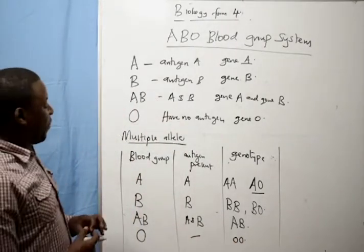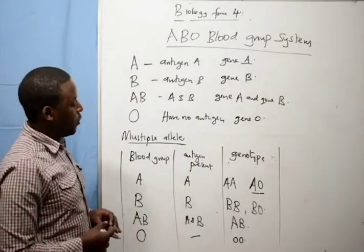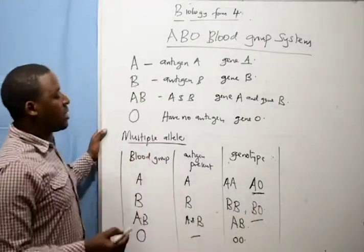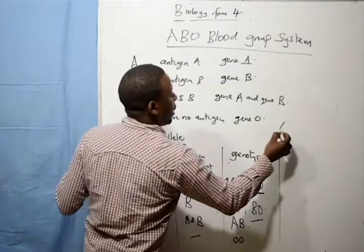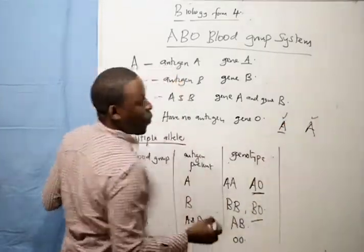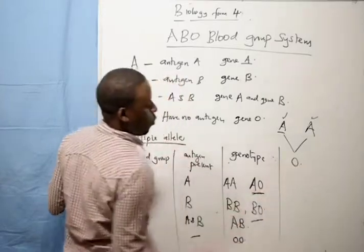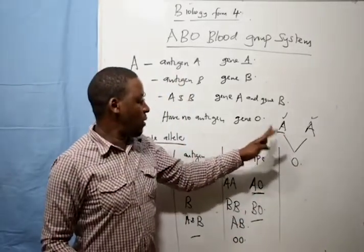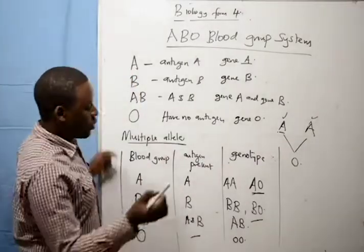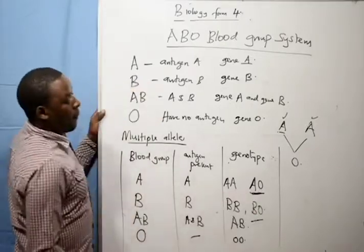A person can have gene O and gene A and still be blood group A. This explains why two people with blood group A — a male and a female — can have a child who is blood group O. The reason is that each parent can have genotype AO and still express blood group A.